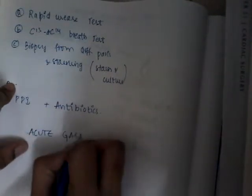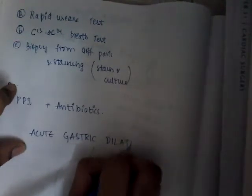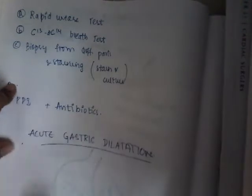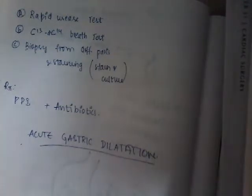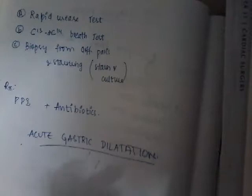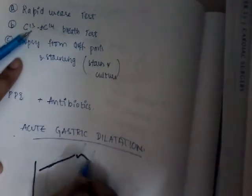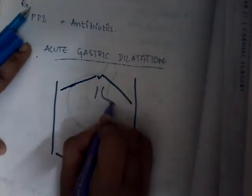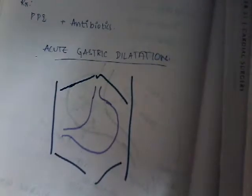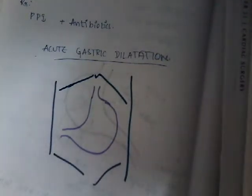Let us learn about one more topic in this lecture, which is acute gastric dilatation. It is not related to H. pylori, but it is a smaller topic. What is acute gastric dilatation? Normally the stomach is present in the epigastric and right hypochondriac region. But in acute gastric dilatation, the stomach is dilated in such a way that it fills the whole abdomen. That is acute gastric dilatation — enormous dilatation of the stomach.